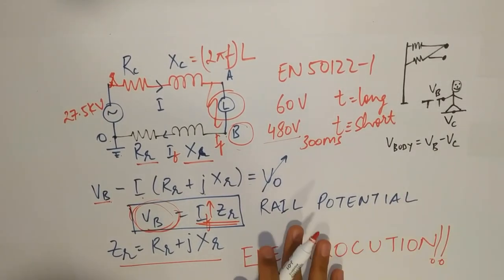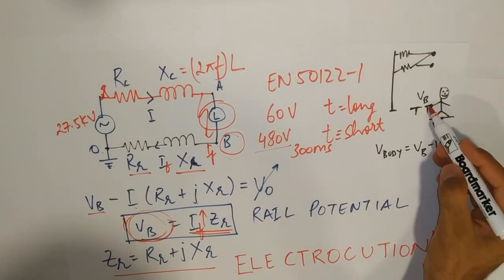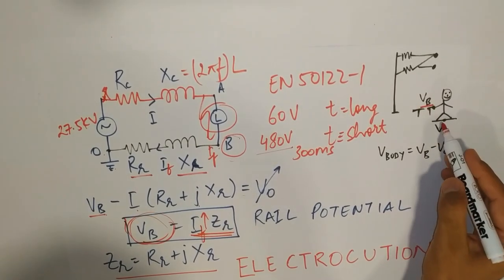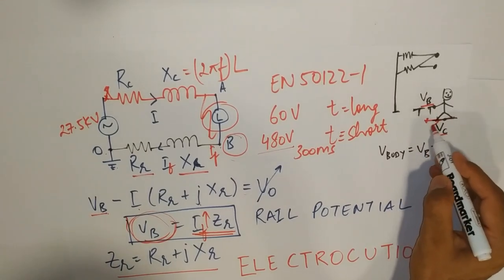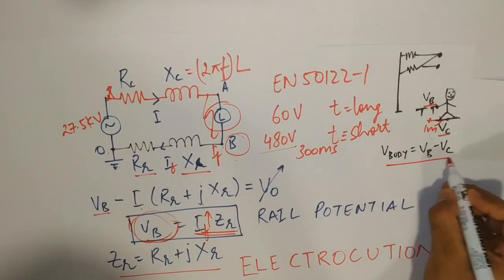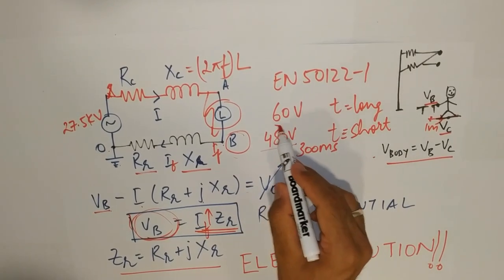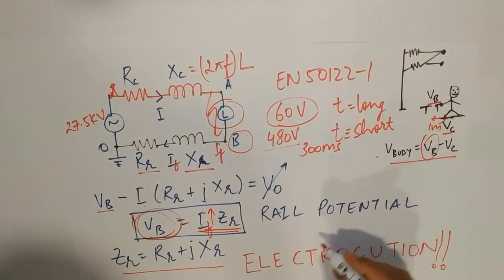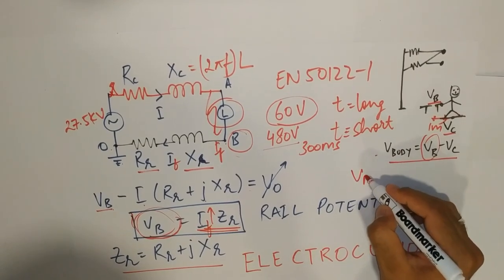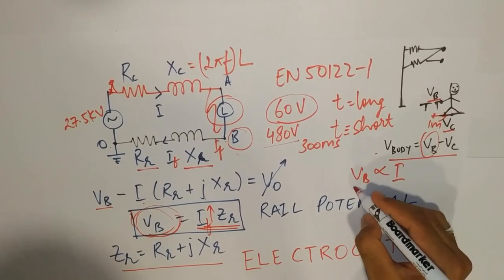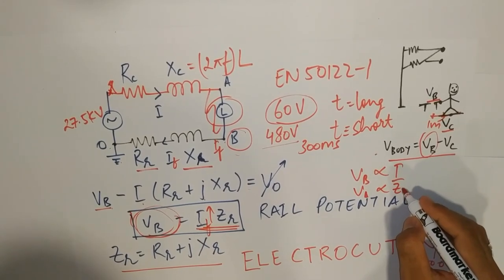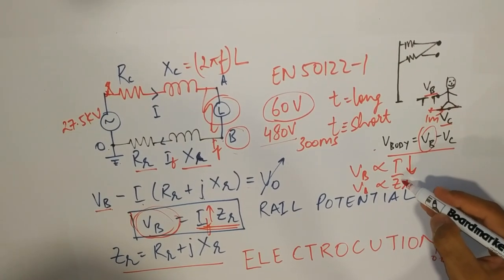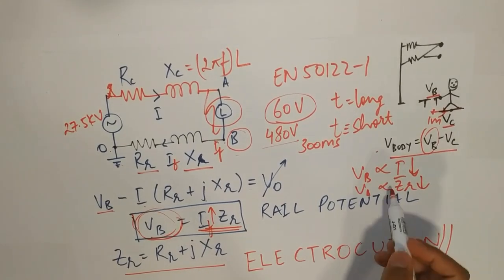Now, what we can do in order to avoid this voltage. See, there is a human being who is trying to touch. A person is trying to touch with his hands to the running rail which is having some voltage VB. And there is some voltage VC where he is standing. We can assume 1 meter apart. So, this will be the voltage across his body. This has to be limited to this voltage value. But what we can do in order to decrease this VB. As this VB is directly proportional to the current. And also directly proportional to the impedance of the return system. So, either we can decrease the current flowing through the running rails or we can decrease the impedance.